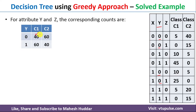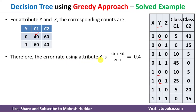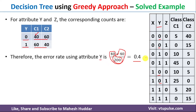The classification error of Y is calculated as the sum of the error terms when Y equals 0 and Y equals 1. The minimum probability when Y equals 0 is 40/200, and the minimum probability when Y equals 1 is 40/200. Adding these two terms gives a total error equal to 0.4.